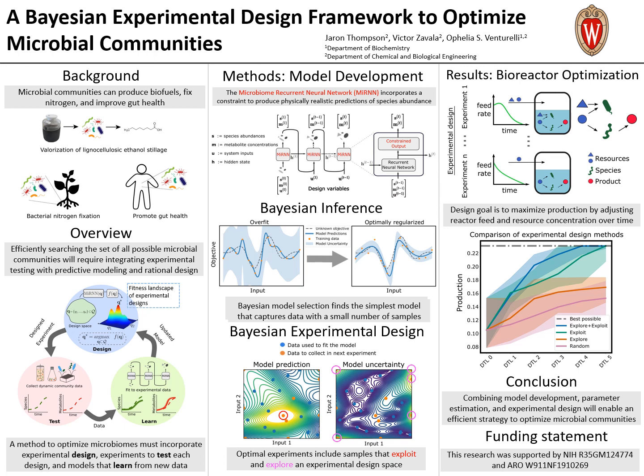An ideal model of the microbiome will predict how species interact and produce or consume metabolites over time. Towards this goal, I present the microbiome recurrent neural network, which incorporates a constraint that prevents physically unrealistic predictions of species abundance. The model works by predicting species and metabolite abundances at discrete time intervals given an initial condition. The constraint prevents the model from predicting negative species abundances or predicting that a species will spontaneously appear if not initially present.